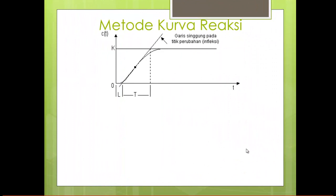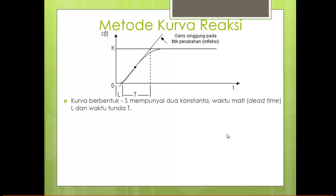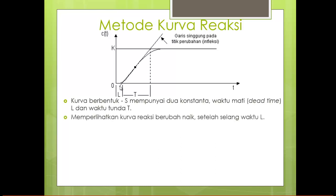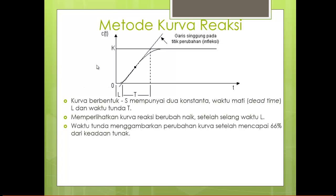Metode kurva reaksi membentuk kurva S. Terdapat parameter L yang disebut sebagai dead time atau waktu mati. Dead time adalah waktu yang terjadi dari mulai T sama dengan nol sampai respon itu muncul. Kemudian nilai T digunakan dengan cara memperlihatkan kurva reaksi berubah naik setelah selang waktu L.